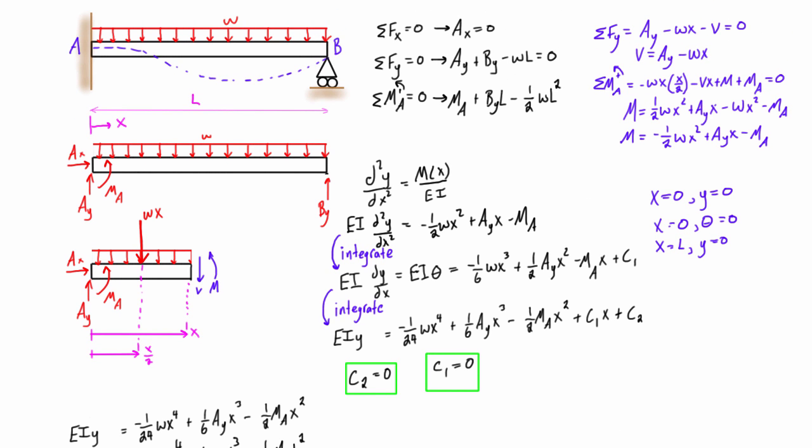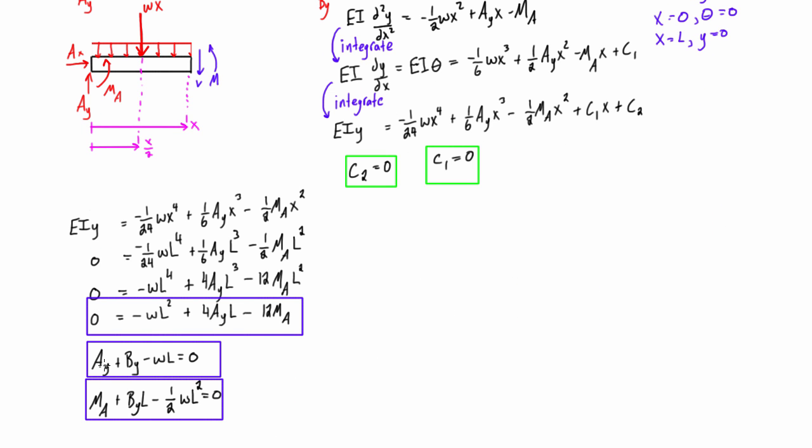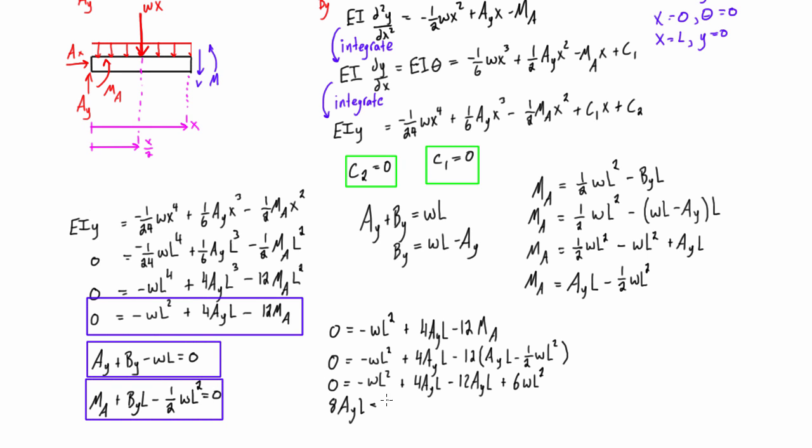Let's bring down these two other equations. I really should have set that equal to 0. Now we have three equations and three unknowns. The unknowns are Ay, By, and Ma. So all we have to do is just solve these simultaneously and then we'll be able to figure out what our three unknowns are.